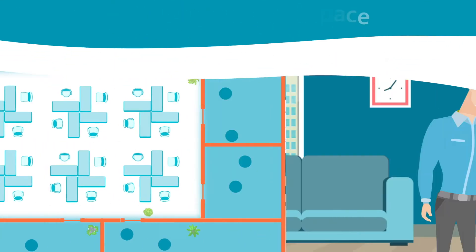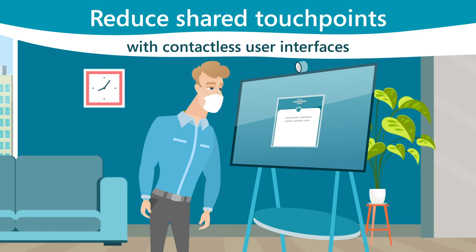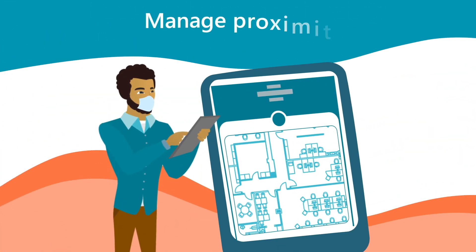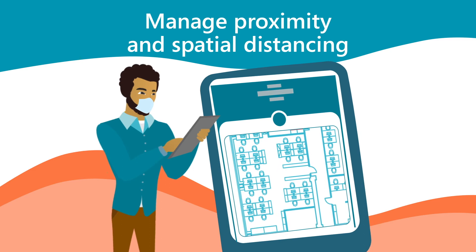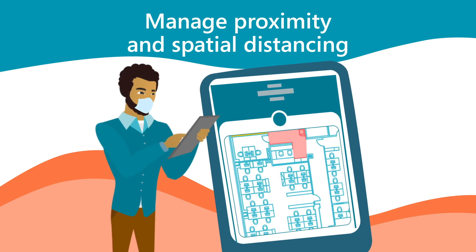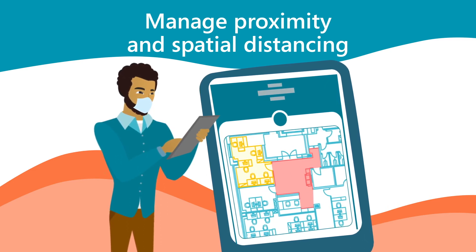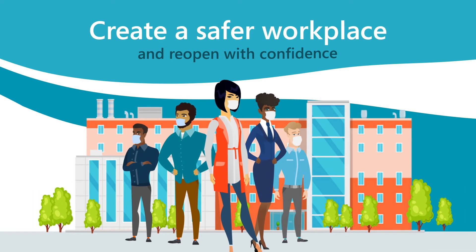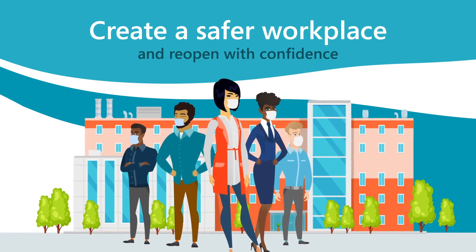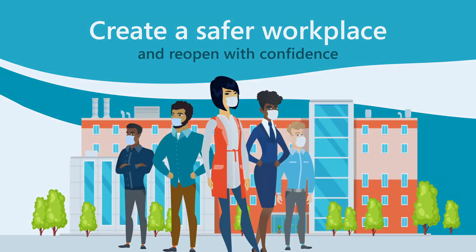Reduce the need for touch with speech and voice recognition. Facility managers can use sensors to identify areas where people tend to cluster, so they can modify the space to reduce bottlenecks. Create a safer workplace using solutions built on Power Platform and Azure IoT.